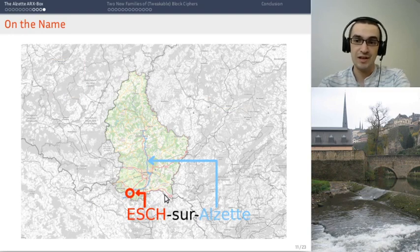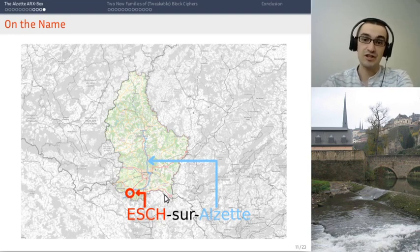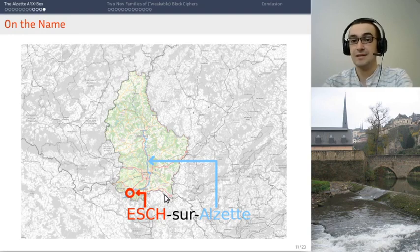Esch is the name of the hash function. And because it's very close to the University of Luxembourg, which is based in Esch-sur-Alzette. Alzette being the name of the river. So that's why.